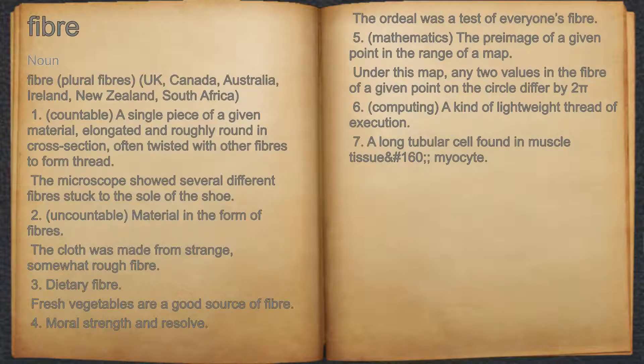Fiber. Noun. 1. Countable. A single piece of a given material, elongated and roughly round in cross-section, often twisted with other fibers to form thread.